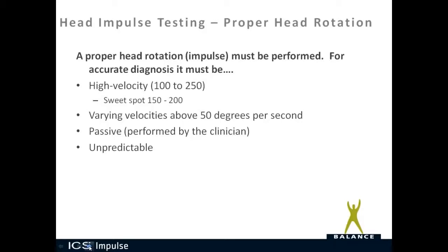Let's talk about proper head rotation. First, it must have a high velocity. The sweet spot is 150 to 200 degrees per second. So when you're doing your head impulse, you want to have the majority of your head impulses between 150 and 200. You want to have varying velocities. It should be passive — obviously you're the one performing the head impulse on the patient — and it should be unpredictable.